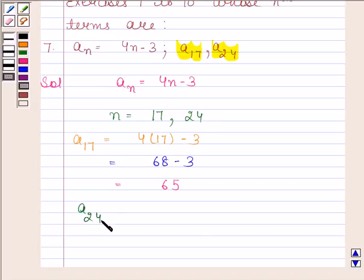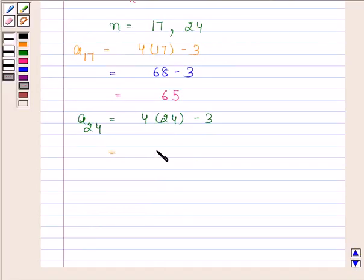By substituting n = 24, we get a24 = 4(24) - 3. This equals 96 - 3, which equals 93.